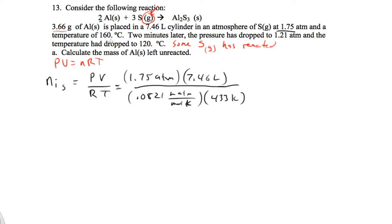We need to change 160 to Kelvin, add that to 273. So our initial moles of sulfur turns out to be 0.367 moles.